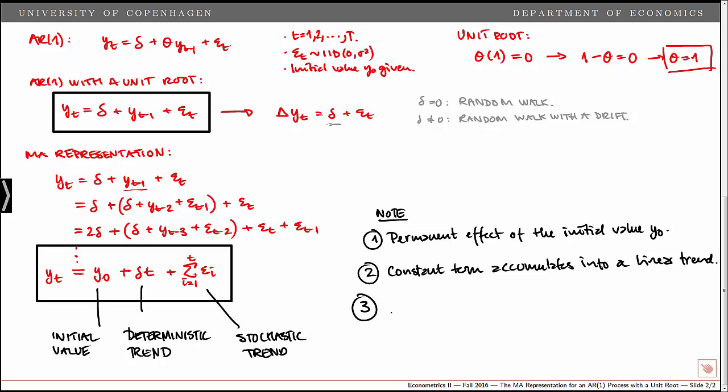The third thing we note is that the shocks have a permanent effect on Y_t. All shocks have the same effect of 1, so ∂Y_{t+s}/∂ε_t = 1 for all s ≥ 0. The effect of a shock at any point in time stays in the process and does not die out over time, as was the case in a stationary AR(1) process.